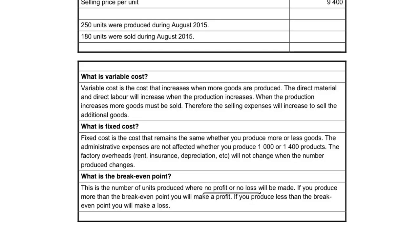So why it's so important for a business to know where the break-even point is — they must know that, for example, you have to produce 200 articles to break even. So if I want to make a profit, I must make more than 200 articles, otherwise this business will never make a profit. If I realize that we are not making 200 articles, it means that we are working at a loss and we will have to do something to increase the number of units produced and the number of units sold.